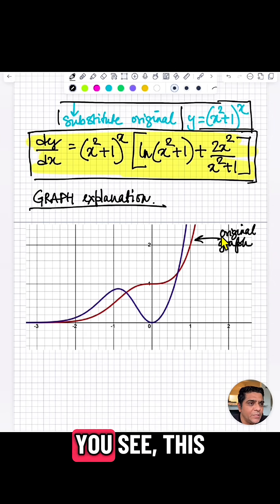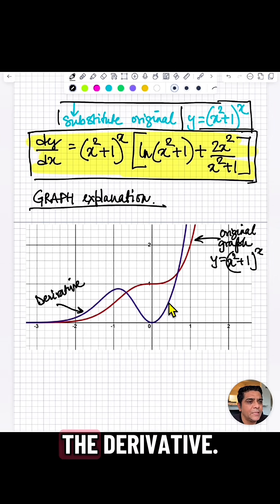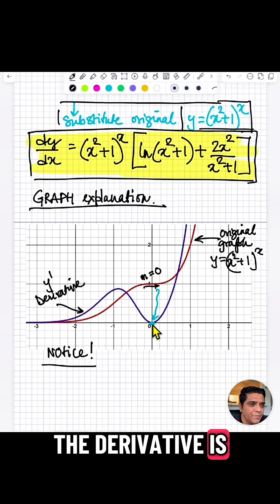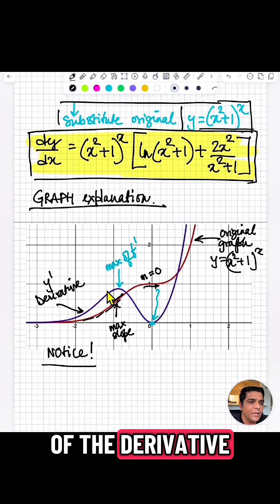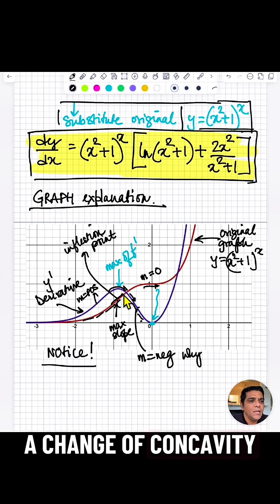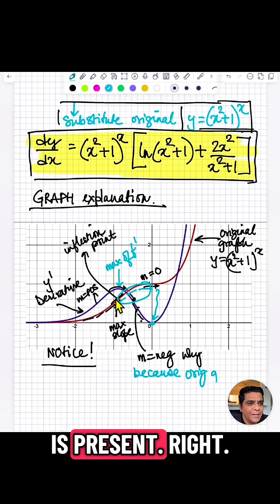And now the graphical explanation is, you see this red is original. The purple is the derivative. You see where the slope of the original function is 0, the derivative is 0. More or less, the derivative is positive most of all the graph. But the slope of the derivative gets negative and positive. But there's a point where there's a change of concavity. And that's where the max slope is present.